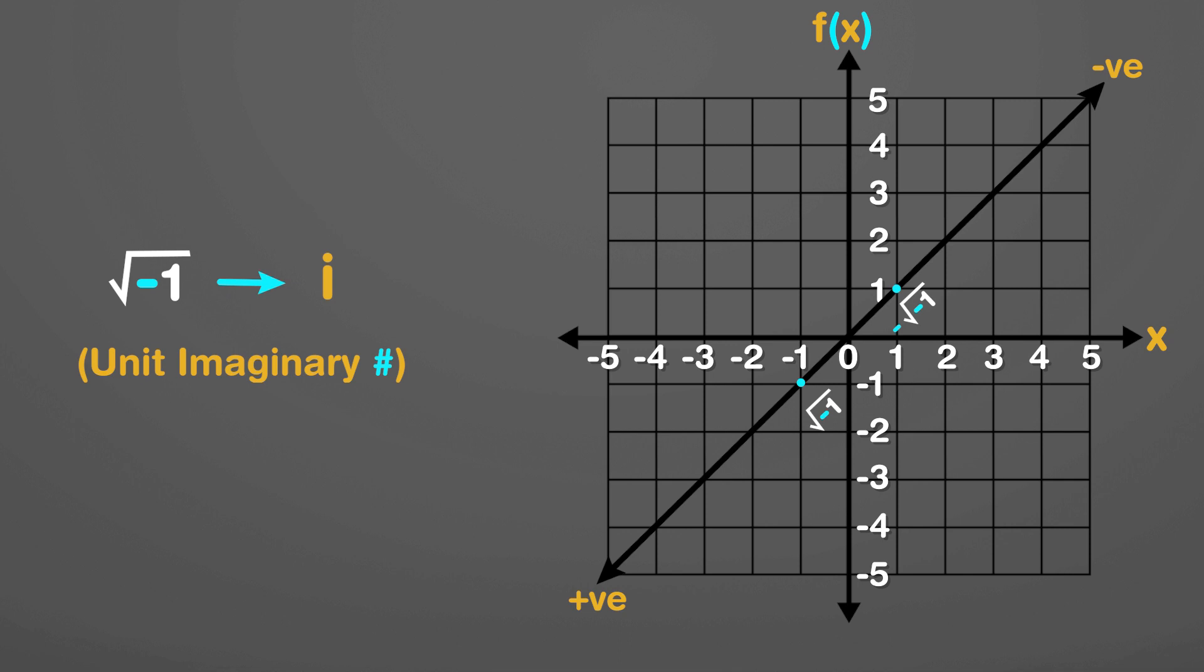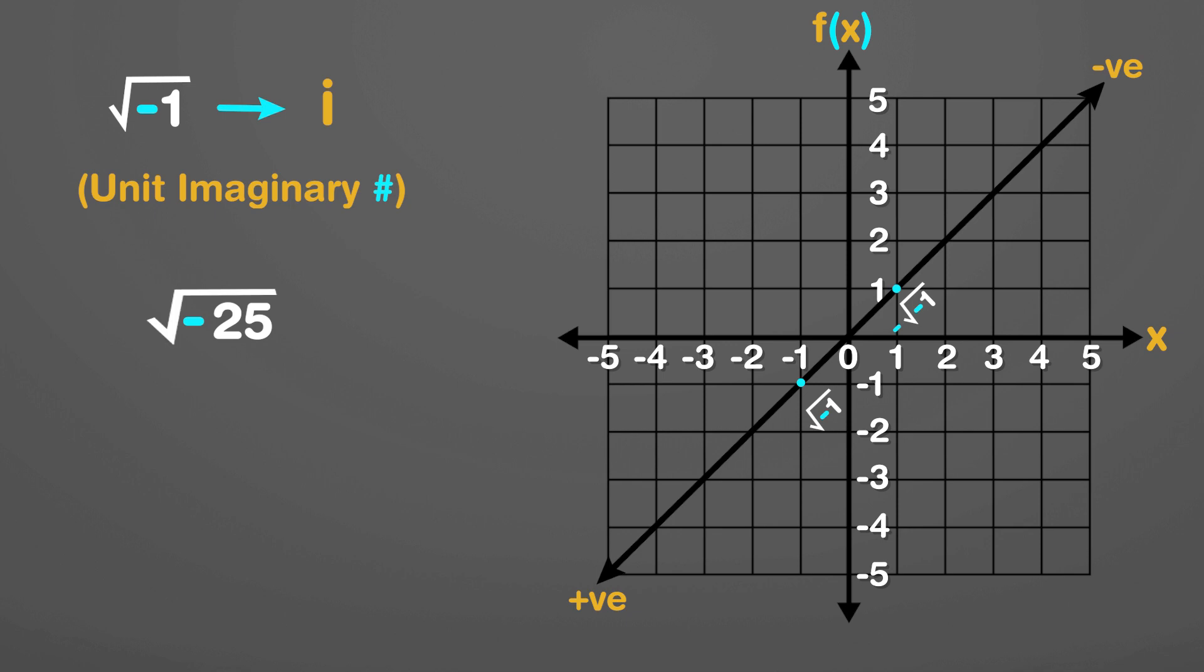But what if we have any other number like 25 with a negative sign inside a square root? Here we apply an algebra trick to make representation of such numbers more convenient. The square root of minus 25 splits into the square root of 25 times the square root of negative 1. This process is important because it allows us to express the square root of any negative number using the square root of minus 1. The square root of minus 25 becomes 5 square root minus 1 or 5i.